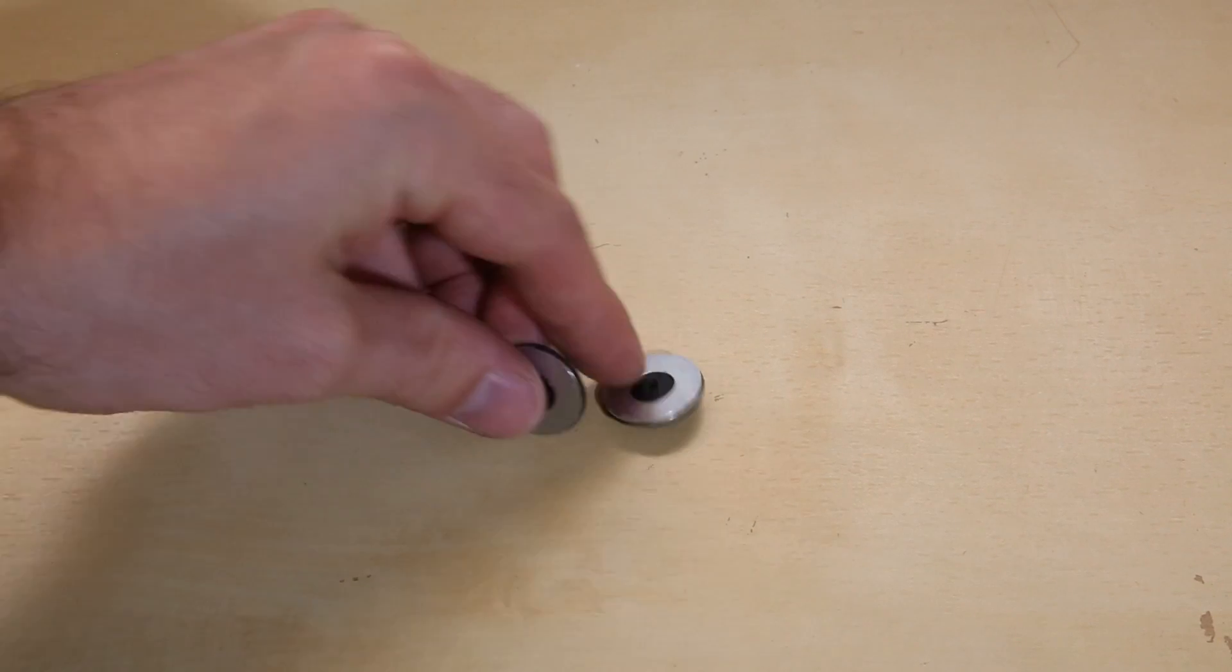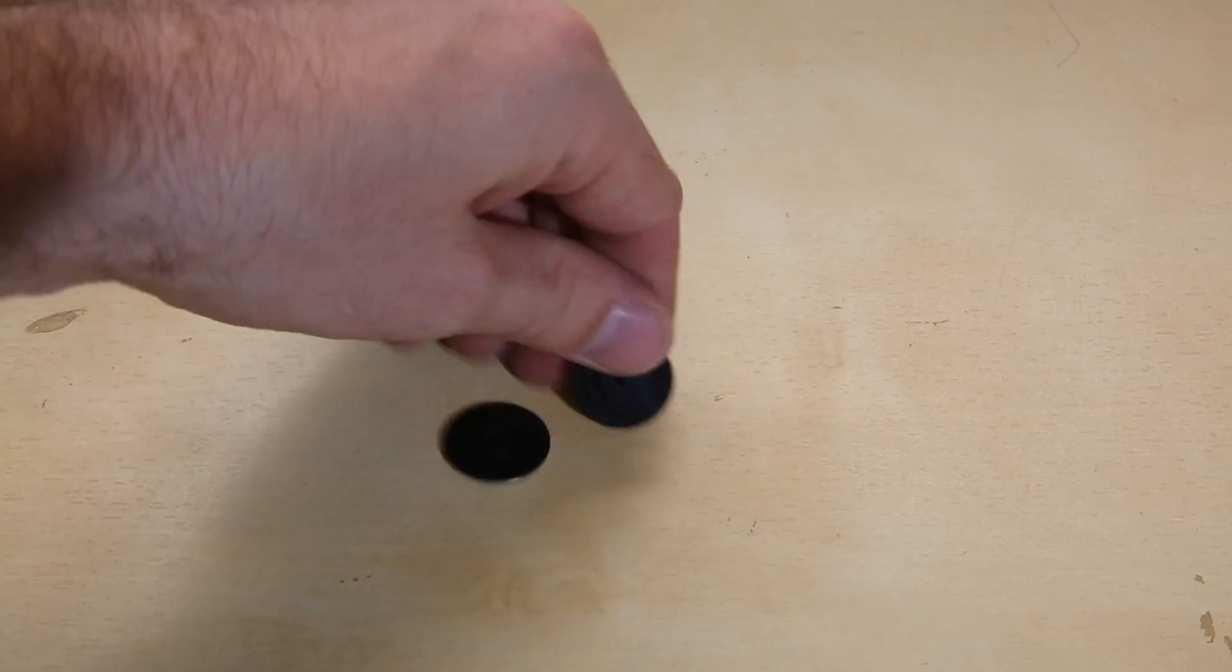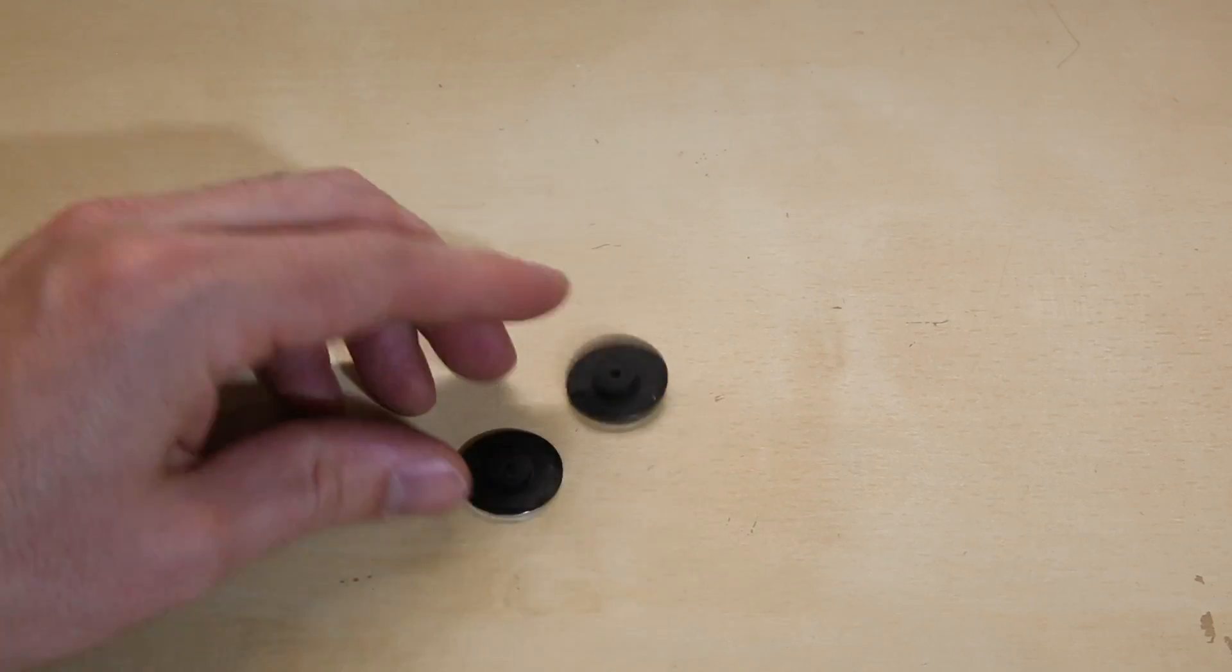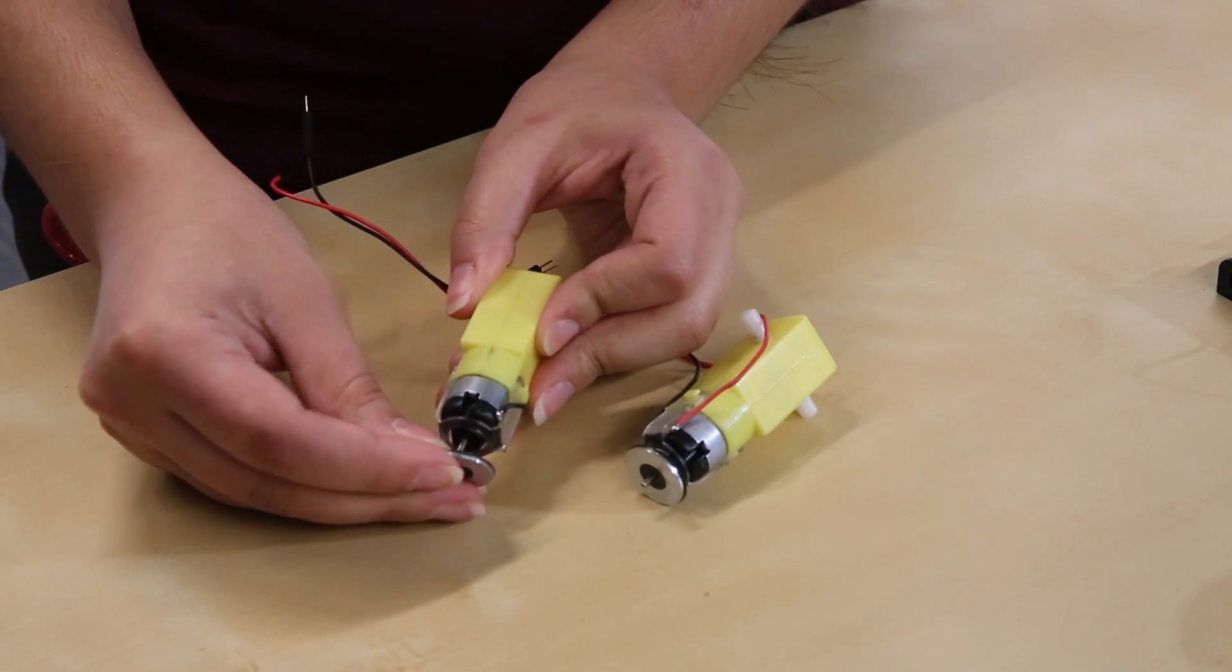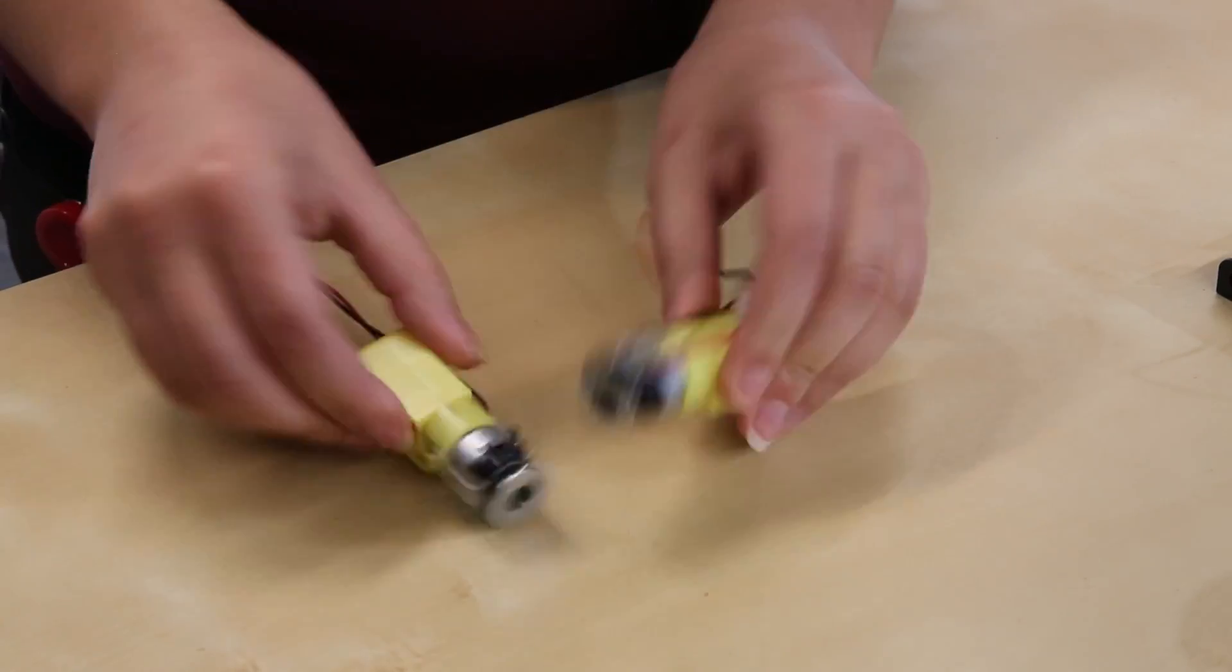To start off, if you have the SIK kit for Redbot, you're going to have these encoder magnet plates and we need to put those on the motors to begin with because they're really hard to locate once you've put everything together, so we're just going to snap those onto the motors right now.